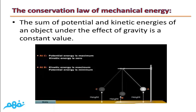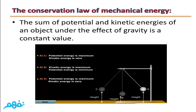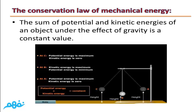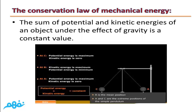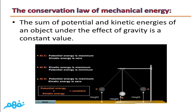If the pendulum continues its motion to A, it reaches again to the maximum height and its velocity becomes zero. So at A, its potential energy is maximum and its kinetic energy is zero. At any point, for the same object under the effect of gravity, potential energy plus kinetic energy is always constant. This is what we call the conservation law of mechanical energy.